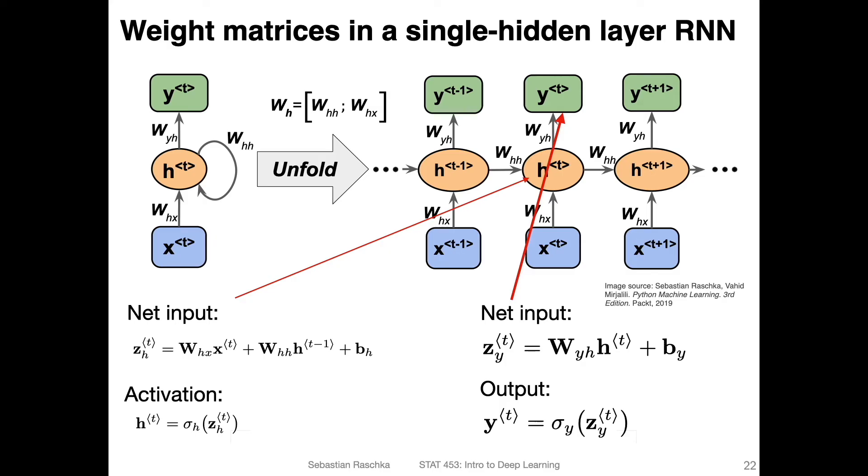Now, how do we compute the net input for the output? This is exactly like what we do for multilayer perceptron. So we have one weight matrix here, the hidden state, and then the bias. And softmax activation or the sigmoid activation if we have a binary output, or just a linear layer if it's a regression output, and so forth. So here, this is really the same that we would do for multilayer perceptron.